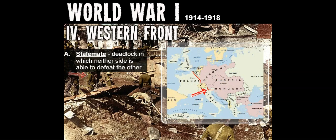On the western front, as the summer of 1914 turned to fall, the war turned into a long and bloody stalemate along the battlefields of France. This deadlocked region in northern France became known as the western front. Both sides dug in for the winter, not knowing the conflict would turn into such a long, deadly stalemate — a deadlock in which neither side was able to defeat the other. Battle lines in France would remain almost unchanged for four years.